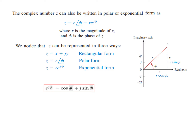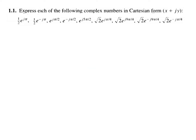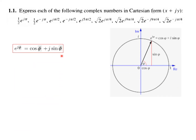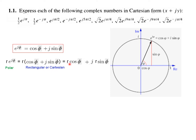This is the question we want to solve — Problem 1.1: express each of the following complex numbers in Cartesian form, that is x + jy form. The formula we'll be using is Euler's formula. cos(Phi) represents the real axis and sin(Phi) represents the imaginary axis. For magnitude R, the polar form R·e^(jΦ) converts to the rectangular form R·cos(Phi) + j·R·sin(Phi).